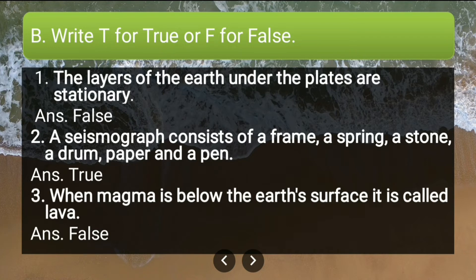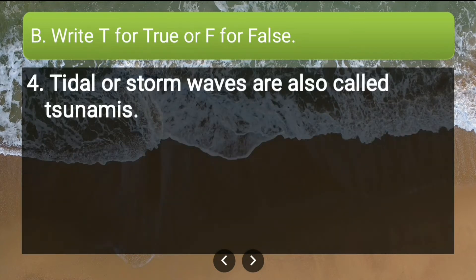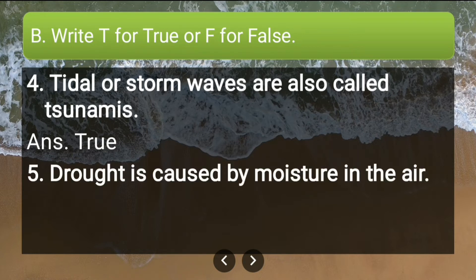Fourth statement: tidal or storm waves are also called tsunamis — this is true, because when tidal waves occur they are very large and are also called tsunamis. Fifth statement: drought is caused by moisture in the air — this is false, because drought occurs mainly because of dry air, not moisture. The answer is false.